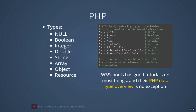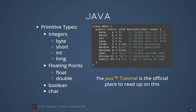PHP is very similar to Python and Ruby. Variables are declared a little differently — you'll see they have a dollar sign prefix — but it is dynamically typed so you don't have to declare the variable type ahead of time. PHP also has a type called resource, which stores references to things like a file, a network connection, or a database.